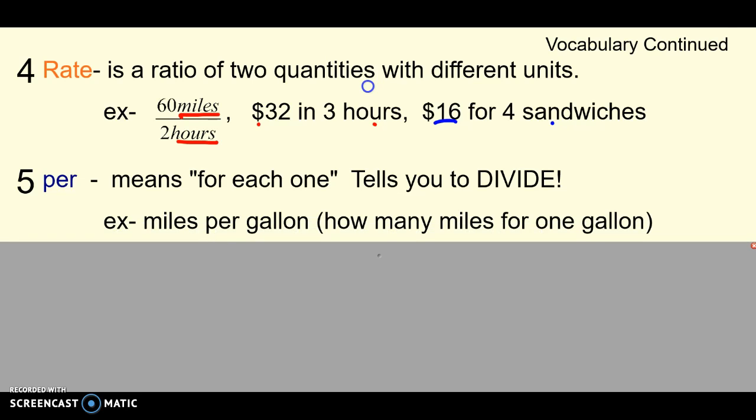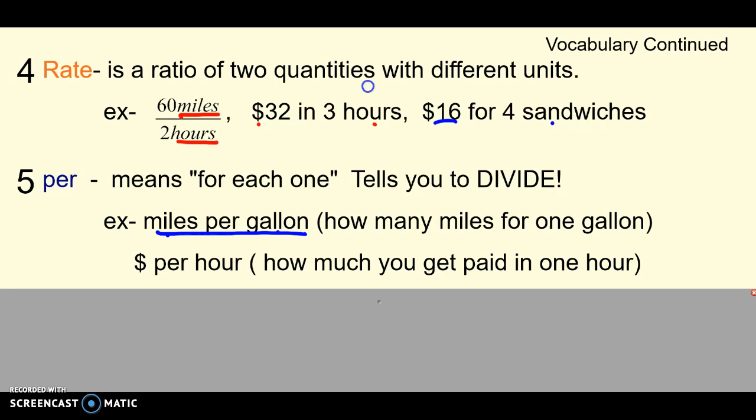Per. Number five. Per is a word that you're going to use a ton in this chapter. Per means for each one. Miles per gallon - how many miles for each gallon? Or dollars per hour - how much money do you get for each hour that you work? Or how many sandwiches per person? We can come up with tons of different rates that use per. When you see per, it tells you to divide. Put this in big letters, circle, star, underline it. Per means to divide them. So when we have a rate and we see per, you're going to be dividing.